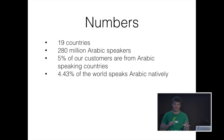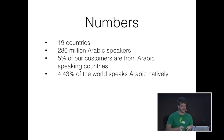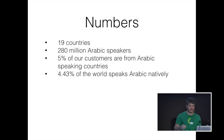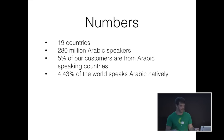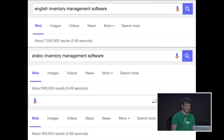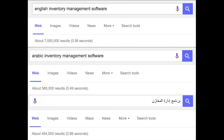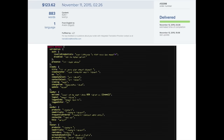Here are the numbers to convince your boss: there are 19 countries that speak Arabic natively, 280 million native Arabic speakers, 5% of our customers are from Arabic countries, and 4.5% of the world speaks Arabic natively. Why are these customers using our product at a higher ratio than the global standard, if there's something already available for the Arabic market? Turns out there isn't. For English inventory management software you get 7 million results; in Arabic, half a million. $123 and 36 hours later, my site was in Arabic.